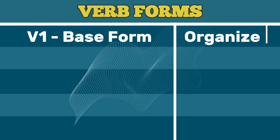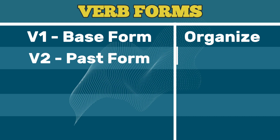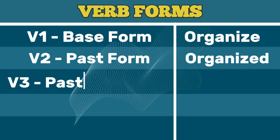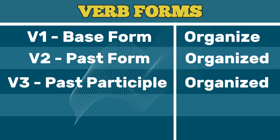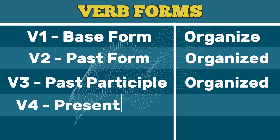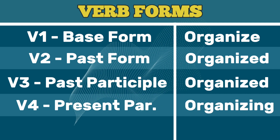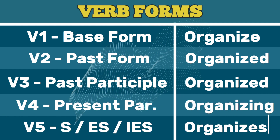V1 Base Form: Organize. V2 Past Form: Organized. V3 Past Participle: Organized. V4 Present Participle: Organizing. V5 Third Person Singular: Organizes.